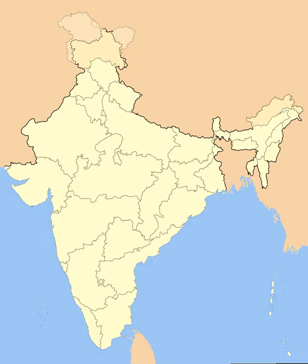Bombay state was enlarged by the addition of Saurashtra state and Kutch state, the Marathi-speaking districts of Nagpur division of Madhya Pradesh, and Marathwada region of Hyderabad state. Rajasthan and Punjab gained territories from Ajmer and Patiala and East Punjab States Union respectively, and certain territories of Bihar were transferred to West Bengal.